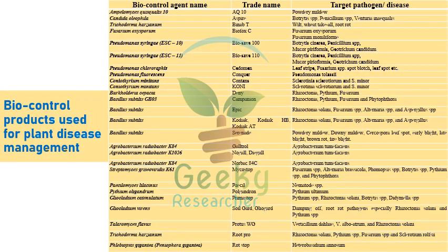Here I have placed some biocontrol products used for the management of plant diseases. Starting with Ampelomyces quisqualis 10, otherwise called AQ10, which is especially recommended for powdery mildew of grapes. AQ10 or Ampelomyces quisqualis 10 is the biocontrol agent recommended for powdery mildew of grapes — this is a very important one.